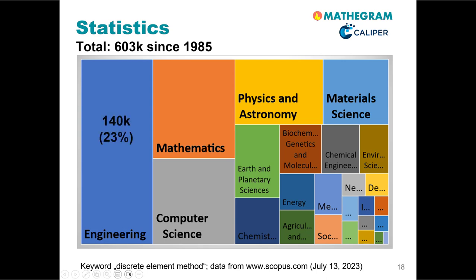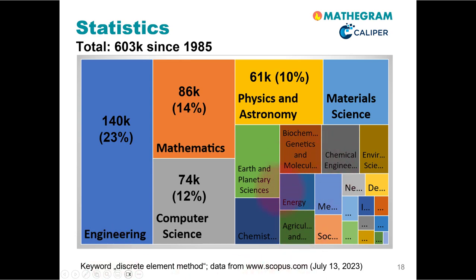Most of those publications were related to the discipline of engineering at 23%, 14% to mathematics, 12% to computer science, and 10% to physics and astronomy, as well as many other fields, as you can see here.